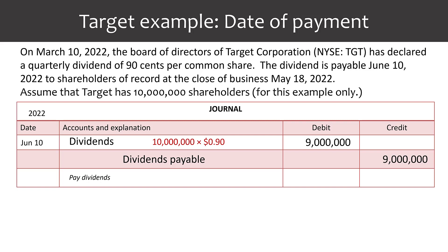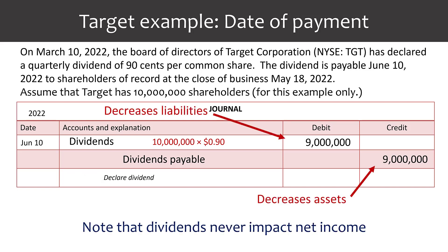Finally, we get to the date of payment. The date of payment in our example is June 10. On this date, Target will pay its dividend of $9 million and will debit dividends payable to remove its liability and will credit cash to reduce cash for the dividend it is paying. In this journal entry, we are decreasing liabilities and decreasing assets. Note that dividends never impact net income.